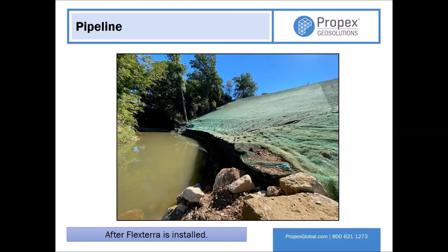Ben followed up: when you can't achieve the desired anchor depth because you're stuck in really hard material, that material is going to give you excellent pullout resistance anyway. What's most important is pullout resistance, not necessarily the precise depth. If you do have a project that includes these products and you run into obstacles, Propex is there to support — whether it's snowing or very hot, they can be on site to take care of things and make the project successful.